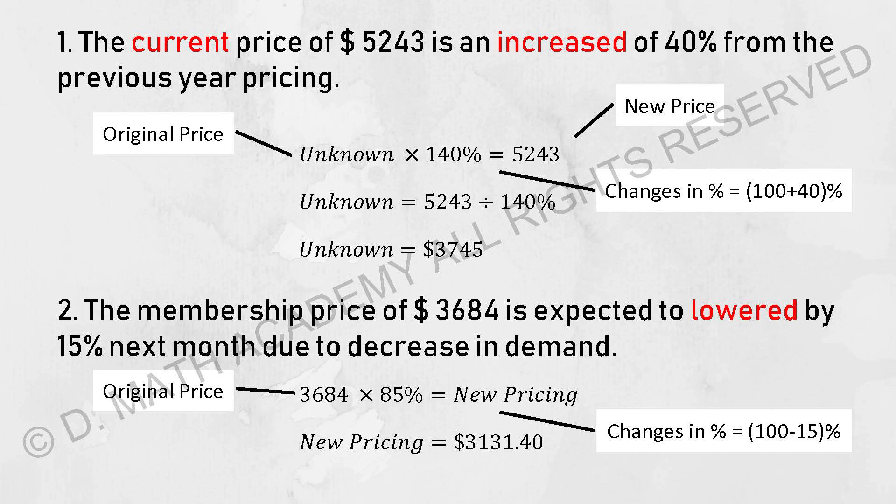Our previous year price multiplied by the percentage equals to our current price, which is our new price. The first thing we know is our original price is an unknown, and the percentage change is actually 140% — because 100% is the original price and 40% is the increase. So unknown times 140% equals to the current price of 5,243.